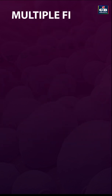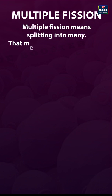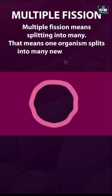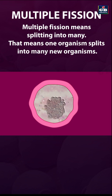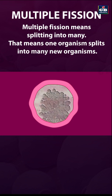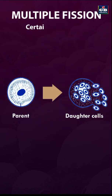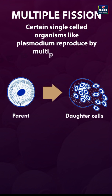Multiple fission. Multiple fission means splitting into many. That means one organism splits into many new organisms. Certain single-celled organisms like plasmodium reproduce by multiple fission.